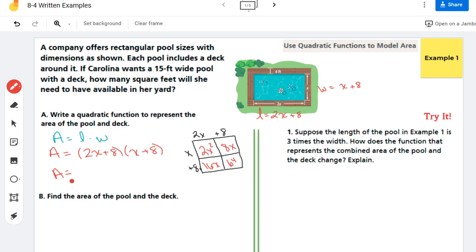So my area, if I start adding together each of these little boxes, I have 2x squared. Plus, in terms of my linear stuff, for my linear stuff, I have 16x and 8x. That's 24x and then a plus 64. So there's my expression.